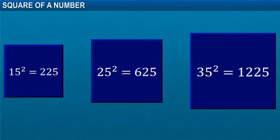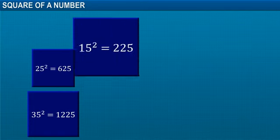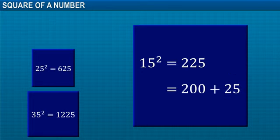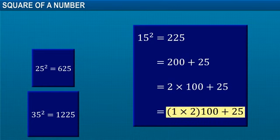Now, let's analyze this pattern further. 15 square is equal to 225. 225 can also be written as 200 plus 25. This can be written as 2 into 100 plus 25, which can be further written as 1 into 2 into 100 plus 25.